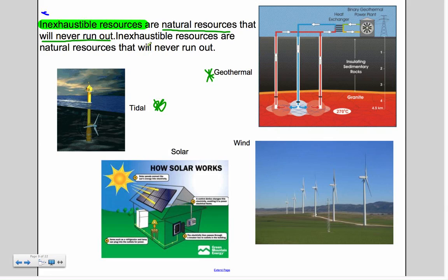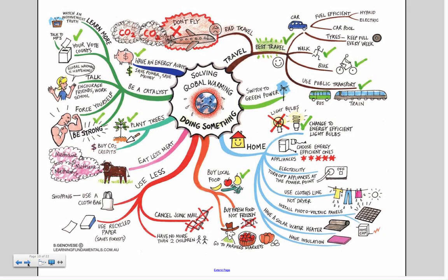Inexhaustible resources are natural resources that will never run out or have a very long shelf life. The big ones include tidal power — the movement of ocean currents — geothermal power, where plants dig down to hot water pockets or close to the mantle, wind power with turbines, and solar panels, which use the sun's energy and basically perform photosynthesis within their carbon cells.